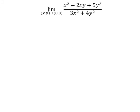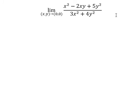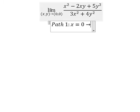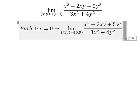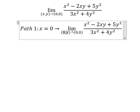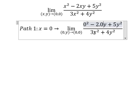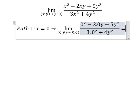Now let's go to the second problem. I will consider path number one, which is x equals to zero. We put zero in here, zero in here, and zero in here. So we have 5y² divided by 4y², which simplifies to five over four.